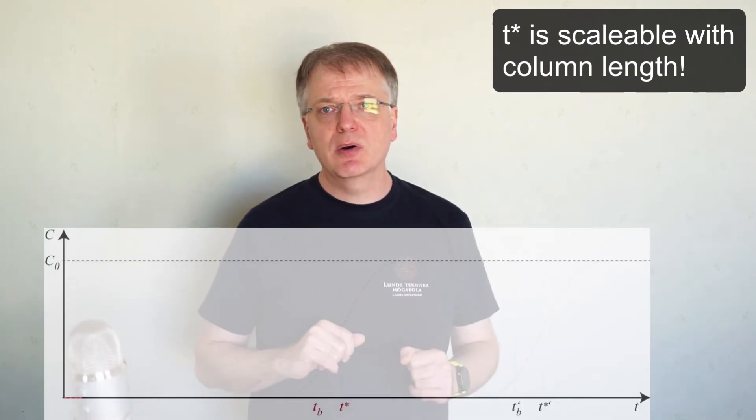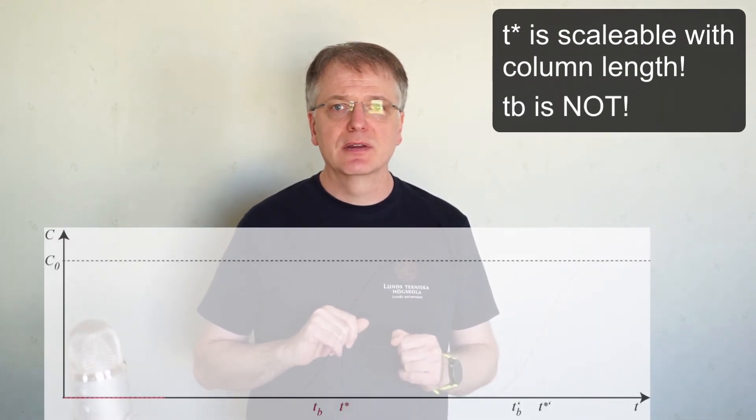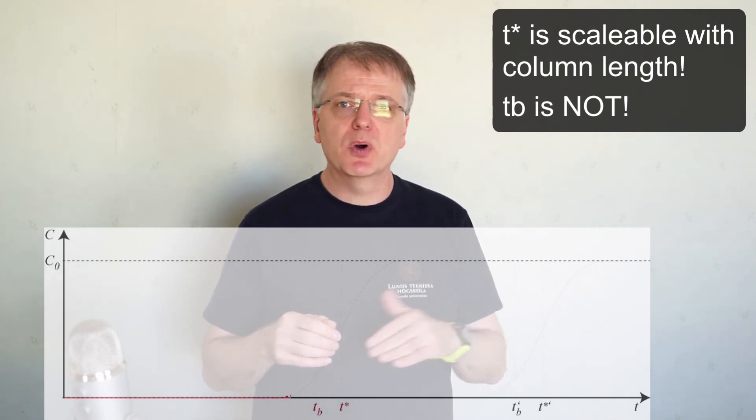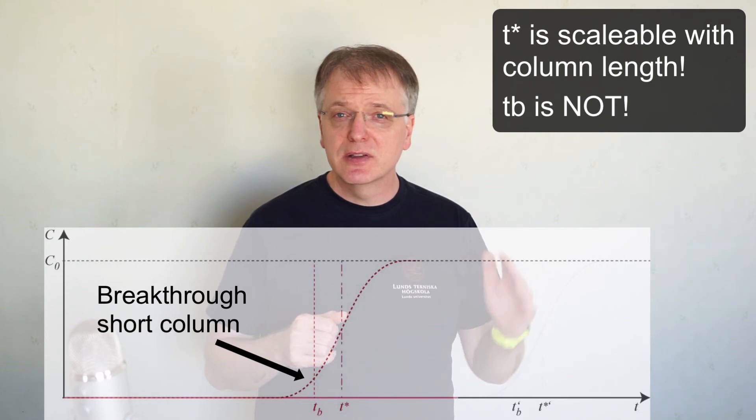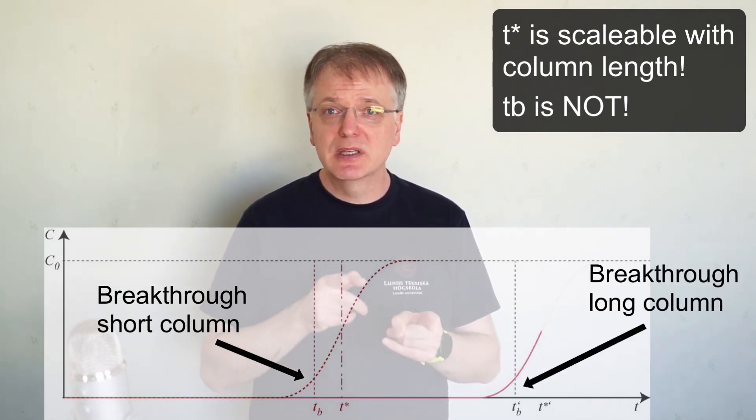Our breakpoint TB, however, isn't scalable with length. If we choose TB for both columns as the point where the concentration in the outlet has reached a certain level, the difference between T star and TB is constant.